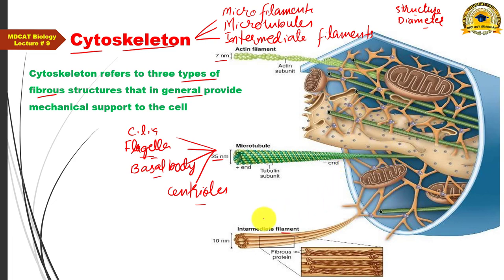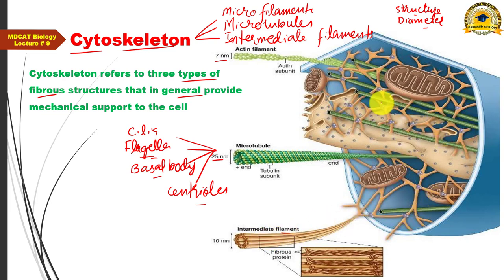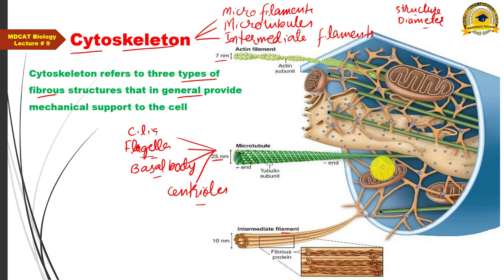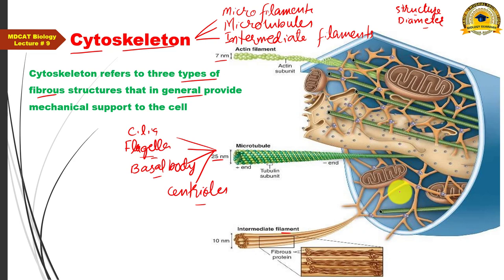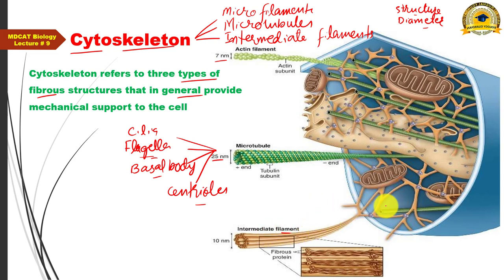In plant cells, although these microtubule-based structures are generally absent, microtubules are still present and freely dispersed in the cytoplasm. During cell division in plant cells, these cytoplasmic microtubules organize to form a spindle shape, facilitating cell division.